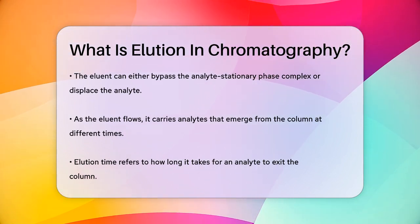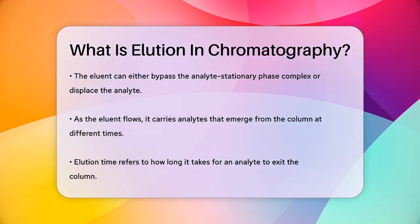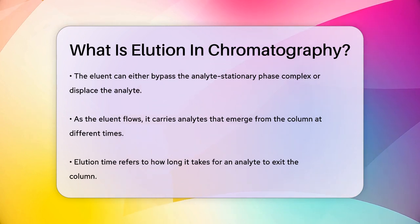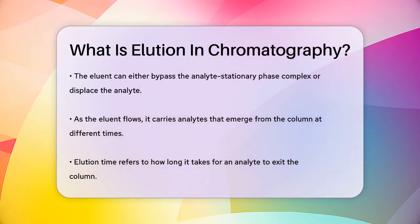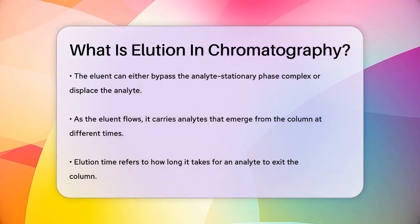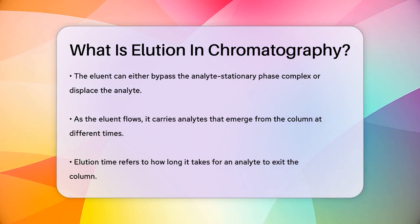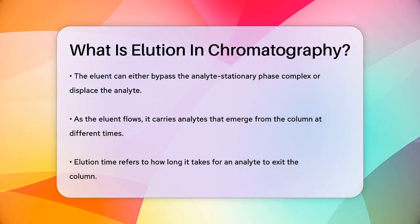This process is what we call elution. The time it takes for an analyte to emerge from the column is called the elution time, and the volume of eluent needed to cause this elution is the elution volume.